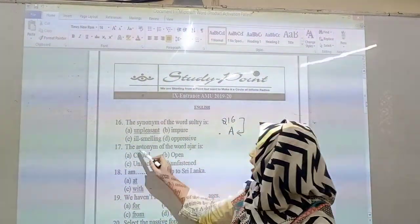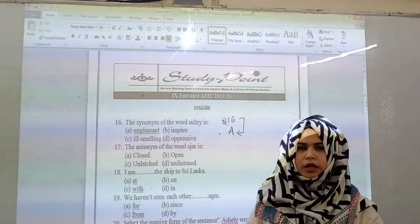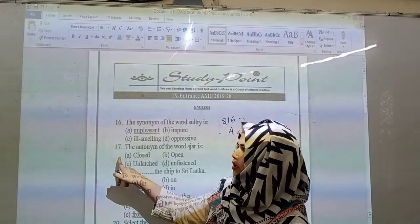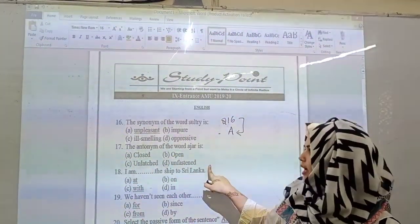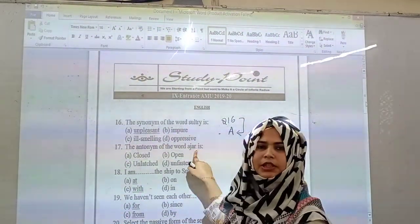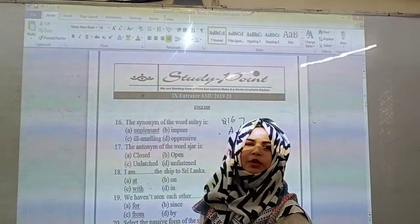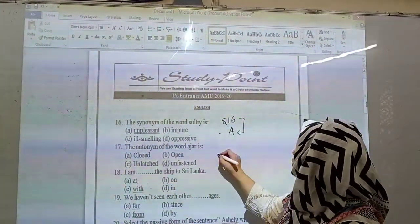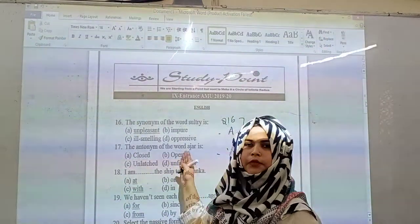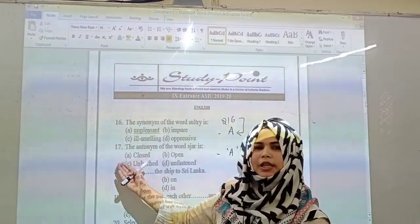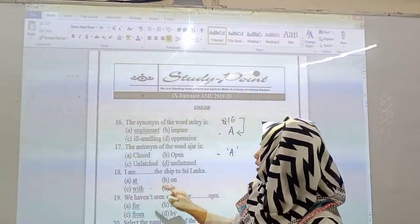Then comes the next question which states: the antonym of the word ajar. Ajar means to open. The first option is closed, open, unlashed or unfastened. As ajar means to open, so the very first option is closed. The correct option will be A. No need to go for the other words because it's very clearly mentioned, closed.